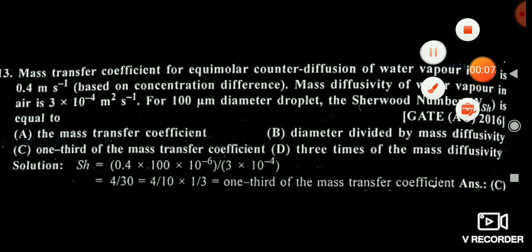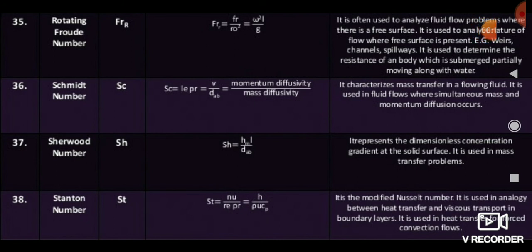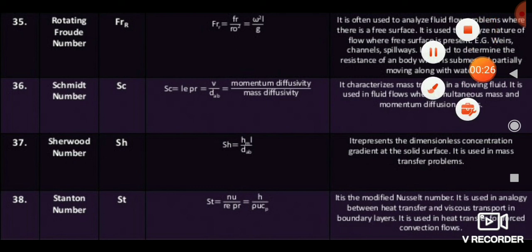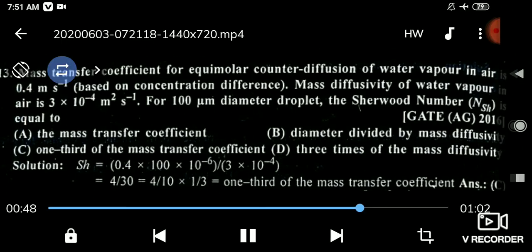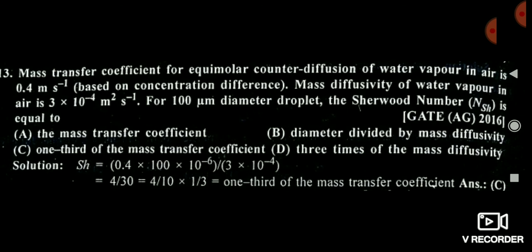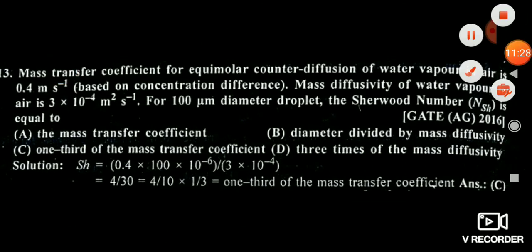One more question has been asked on the Sherwood number. The Sherwood number equals H × L / D_AB, where H is the heat transfer coefficient, L is the length or diameter of the droplet, and D_AB is the mass diffusivity coefficient. In this question, the mass diffusivity coefficient is 3 × 10⁻⁴ m²/s, the diameter L is 100 micrometers, and H is 0.4 m/s. Putting these values into HL/D gives the answer: one-third of the mass transfer coefficient — option C.